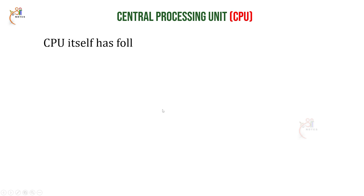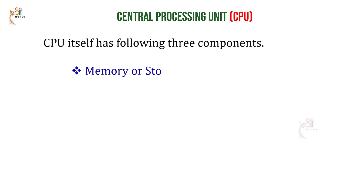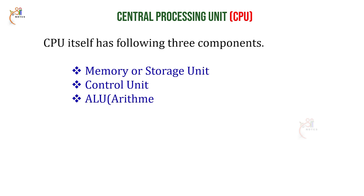A CPU consists of the following three components: Memory or Storage Unit, Control Unit, and ALU - Arithmetic Logical Unit. We will go through each one by one.